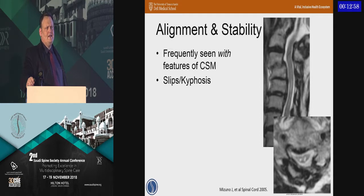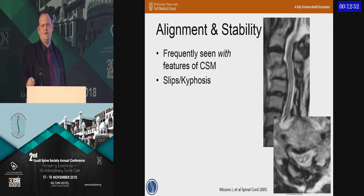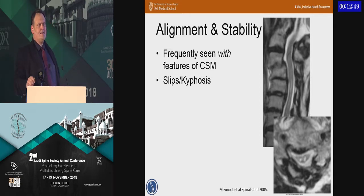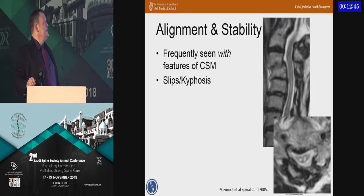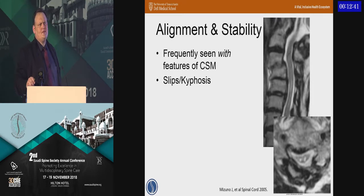Another issue we see in the U.S. is that OPLL features will frequently be seen in conjunction with the more standard features of spondylotic myelopathy — problems like degenerative anterolisthesis and kyphosis from disc collapse. These, in combination, can complicate typical treatment options like laminoplasty.